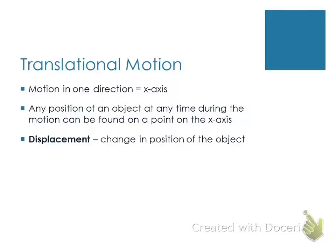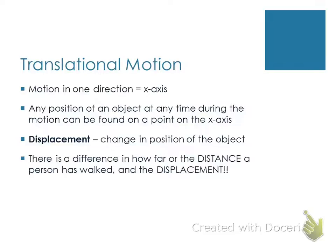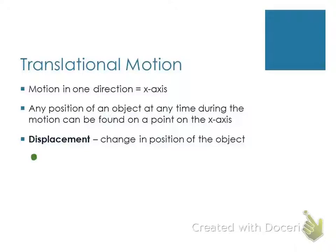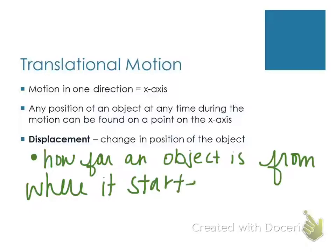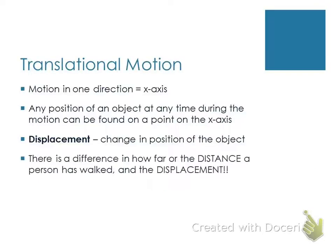When I locate an object and tell how far it is from where it started, that's called displacement — a change in position of the object. I want you to make a special note: displacement is specifically how far an object is from where it started. That is the specific definition. There is a difference between the distance a person has walked and the displacement of a person.